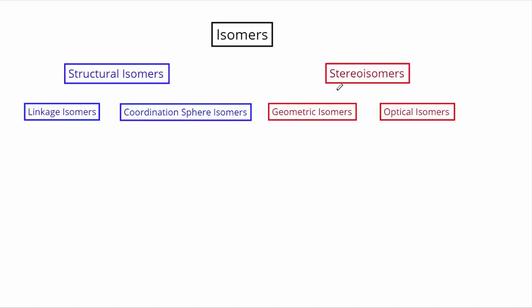The next topic in coordination chemistry is going to be a lengthy discussion on isomers. For two compounds to be isomers, they have to have all the same number and type of each atom. There are two major types of isomers: structural isomers on the left and stereoisomers on the right.